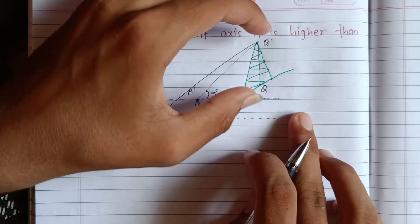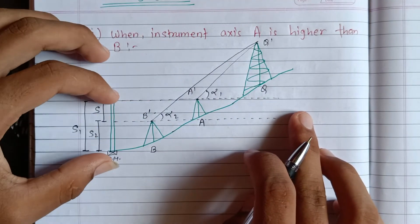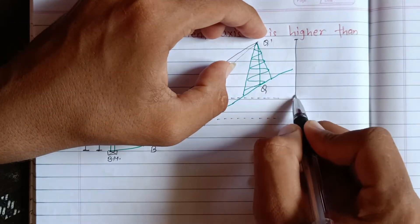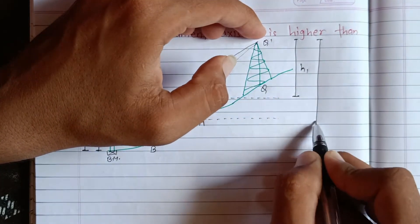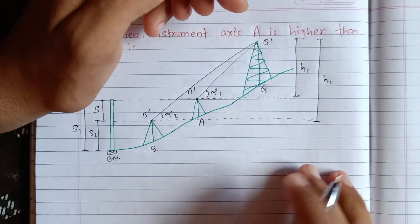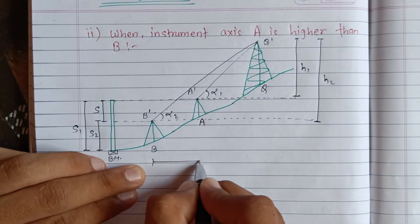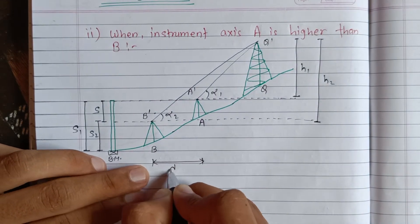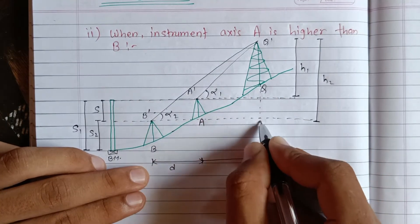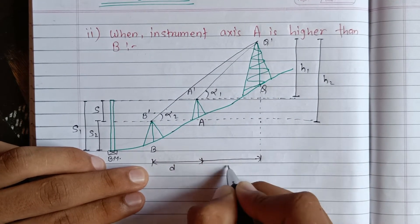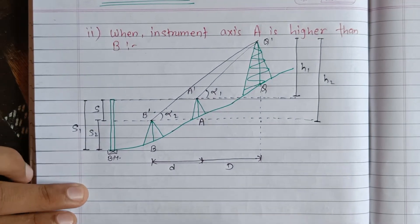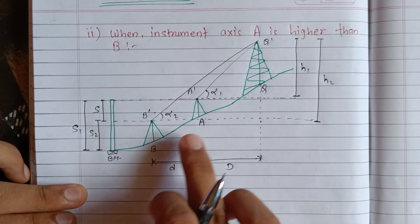Looking at points A and B, this is S1 and this is S2. If you look at the diagram, S1 corresponds to one staff reading and S2 to another. These staff readings are fundamental to our leveling calculations.